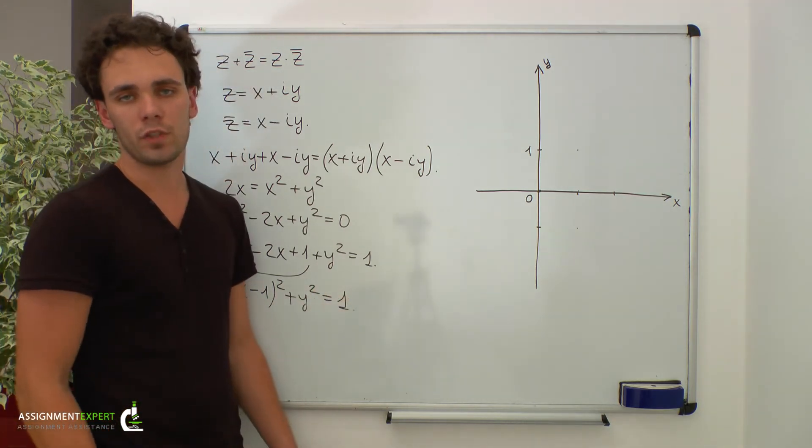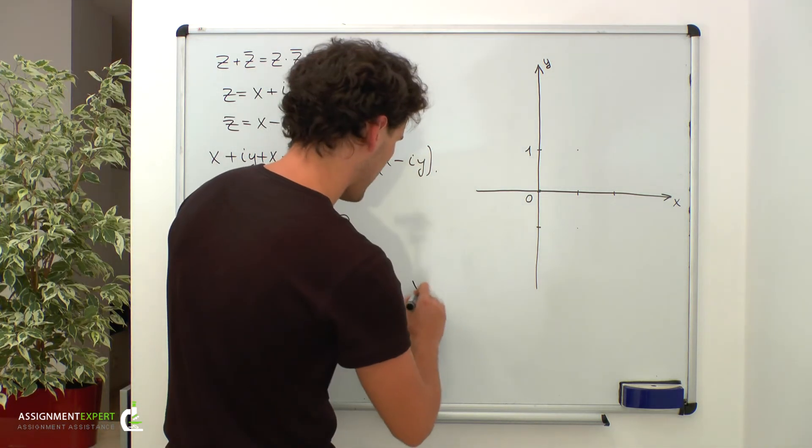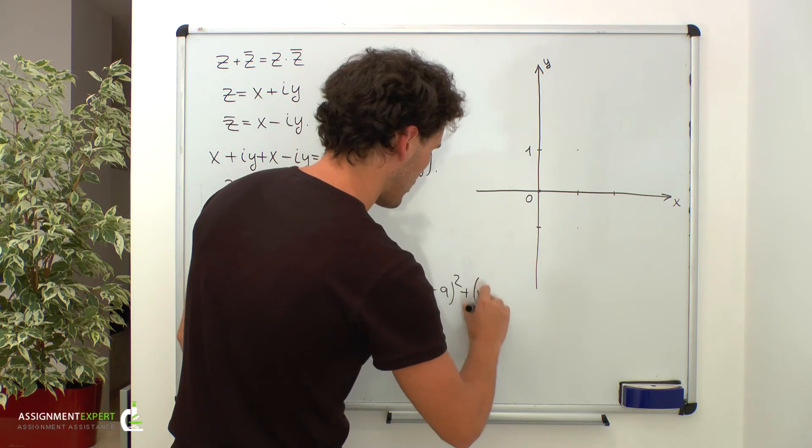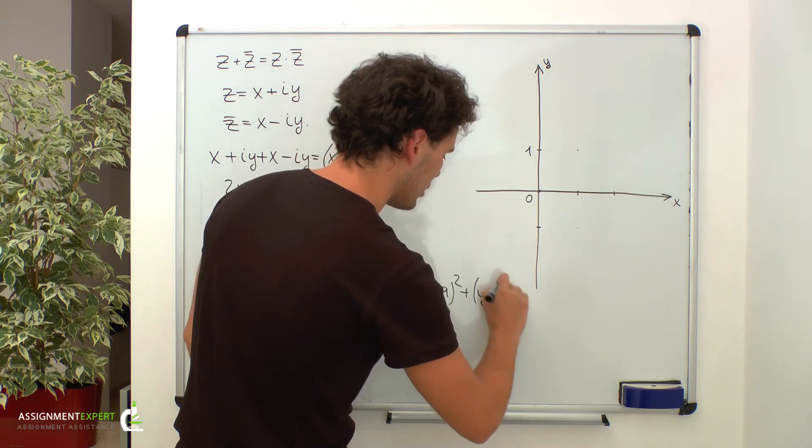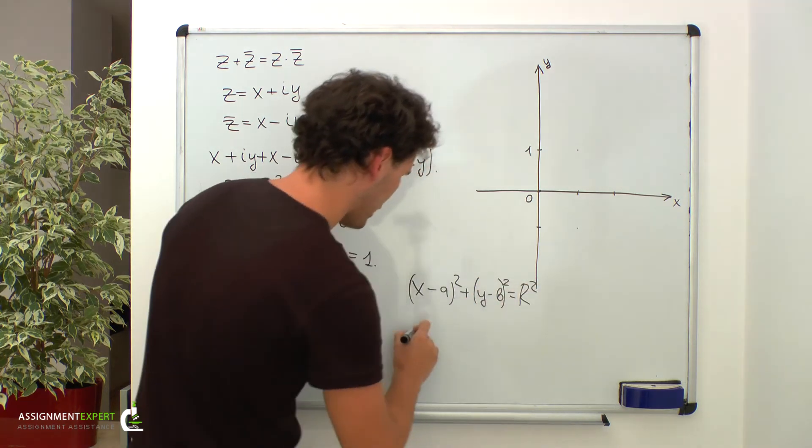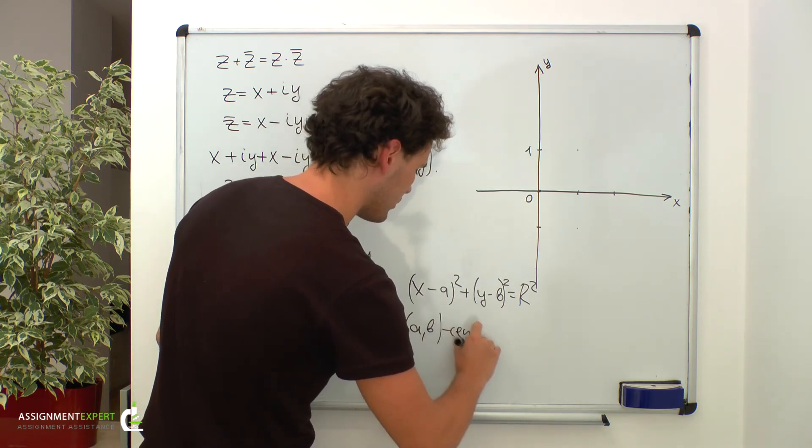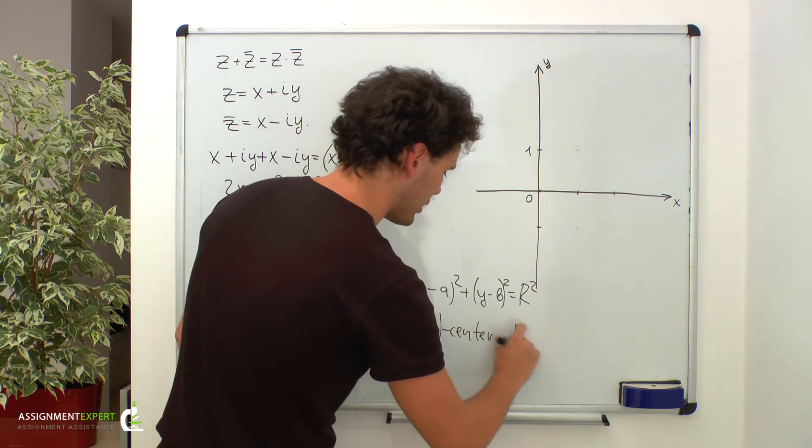Recall the general equation of a circle: It is x minus a squared plus y minus b squared equals r squared, where a comma b is the center of the circle and r is its radius.